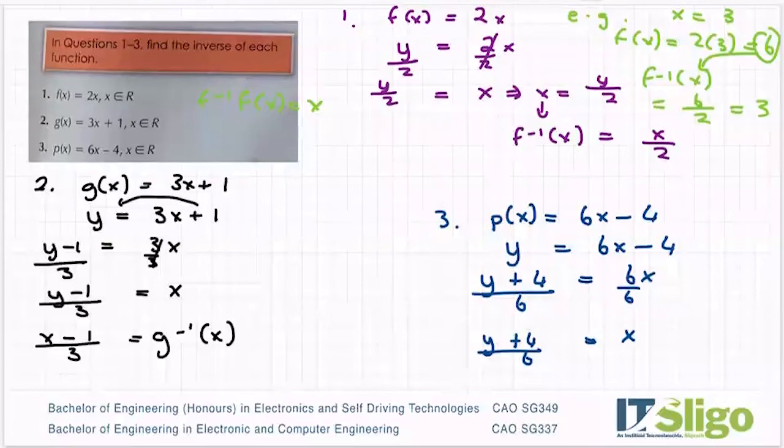And then, sorry, it's just a force of habit to say f inverse, but it's p inverse of x is equal to x plus 4 over 6.